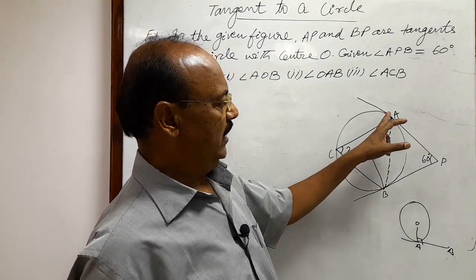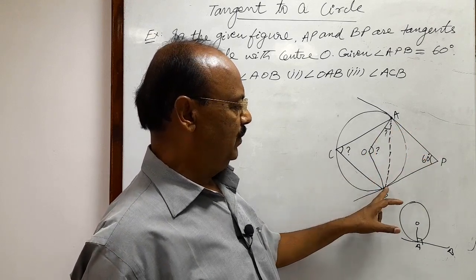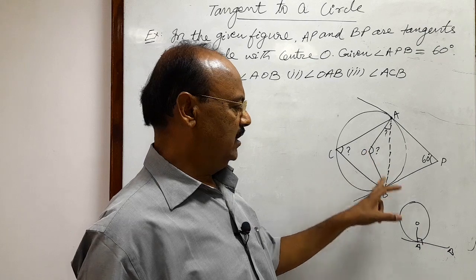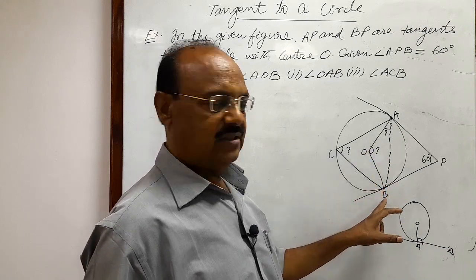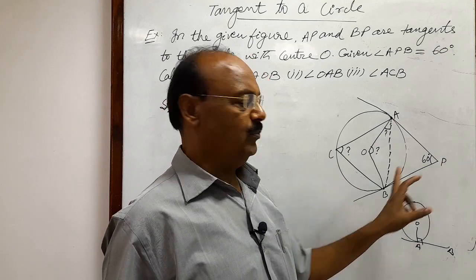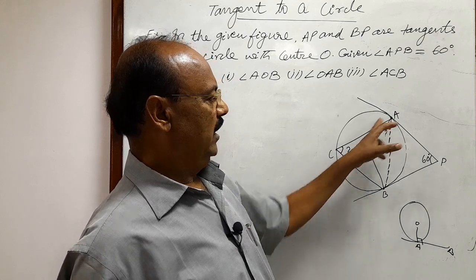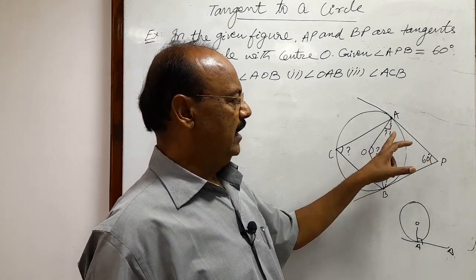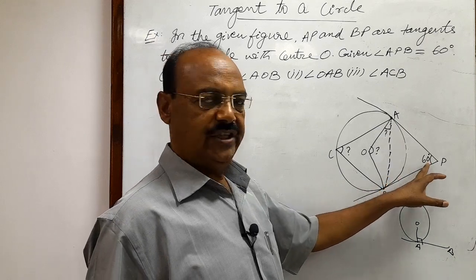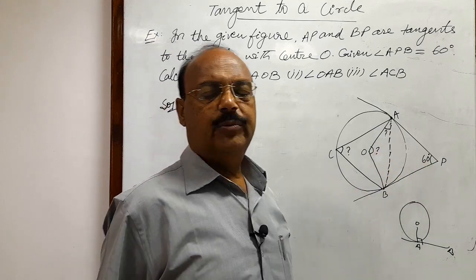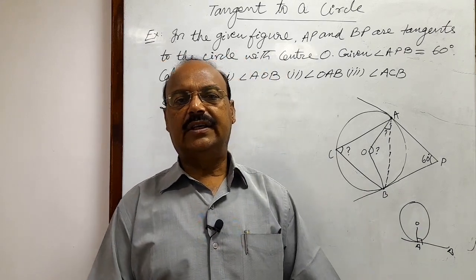Similarly, angle OAP is equal to 90 degrees. And angle OBP is also 90 degrees, because OB is also a radius perpendicular to tangent BP at the point of contact B. So in quadrilateral AOBP, three angles are known: 90 degrees, 90 degrees, and 60 degrees.